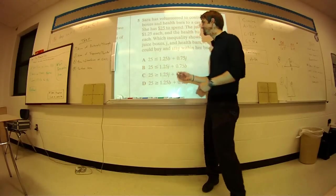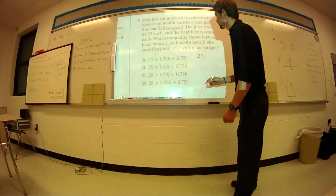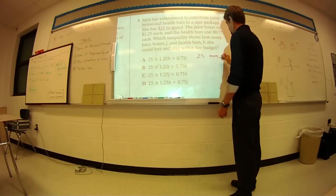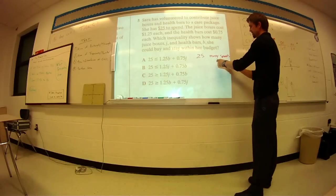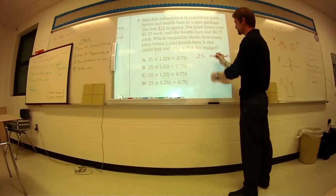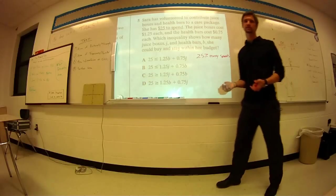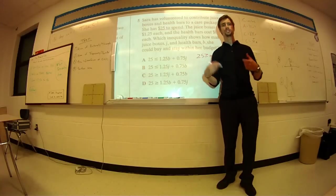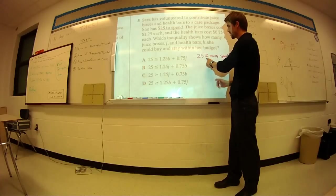How much money does she have to spend? She has $25 to spend. Now, the money she actually spends. So the money she spends, obviously, she cannot spend more than she has. So therefore, $25 must be greater than or equal to the amount of money she spends. She must spend less than or equal to $25. She can't go over that. That's why we know the inequality sign goes this way.